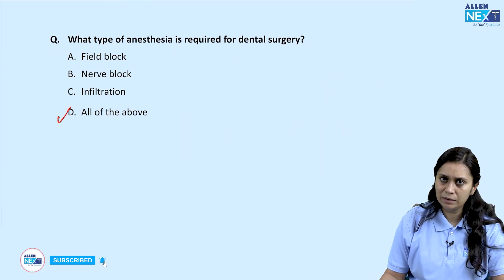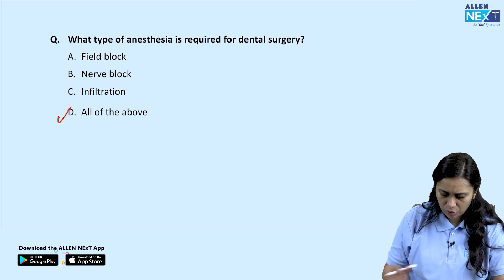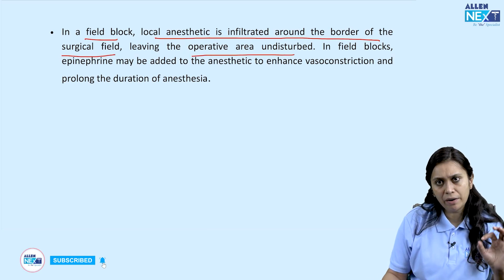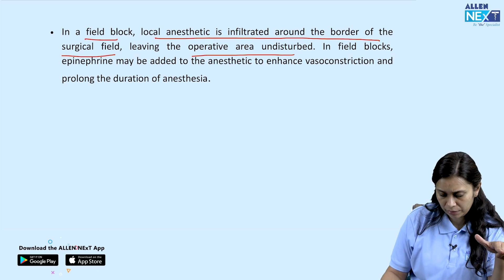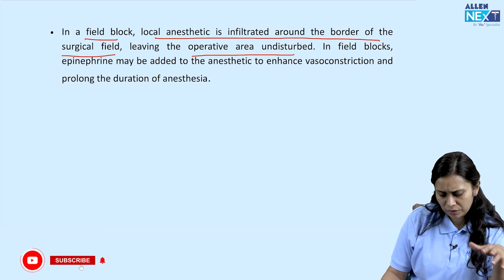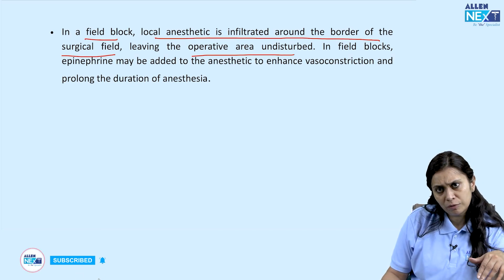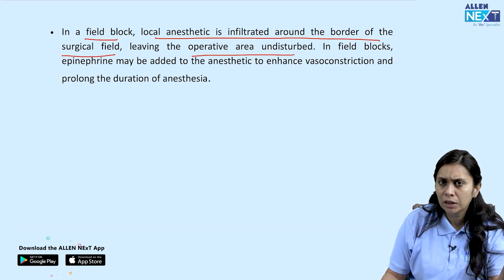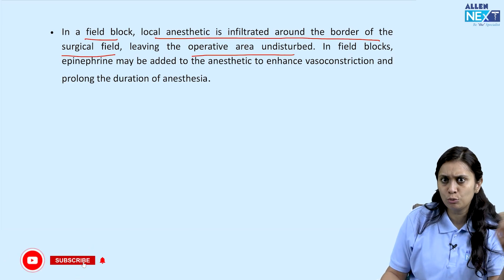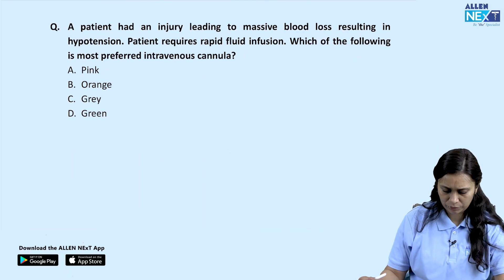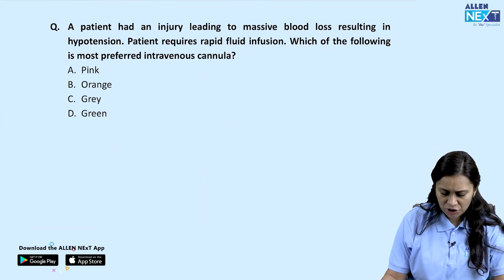In field block, local anesthetic is infiltrated around the border of the surgical field, leaving the operative area undisturbed — it is placed around the operative area in a diamond fashion. For nerve block, field block, or local infiltration, addition of epinephrine at 1 in 200,000 concentration is always good to produce vasoconstriction and prolong the duration.